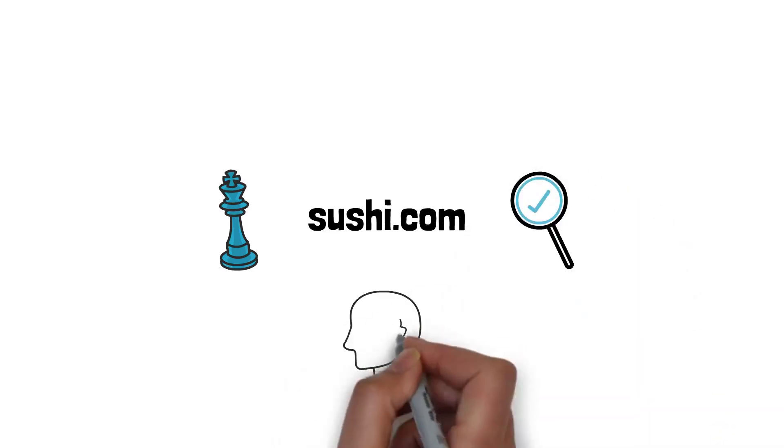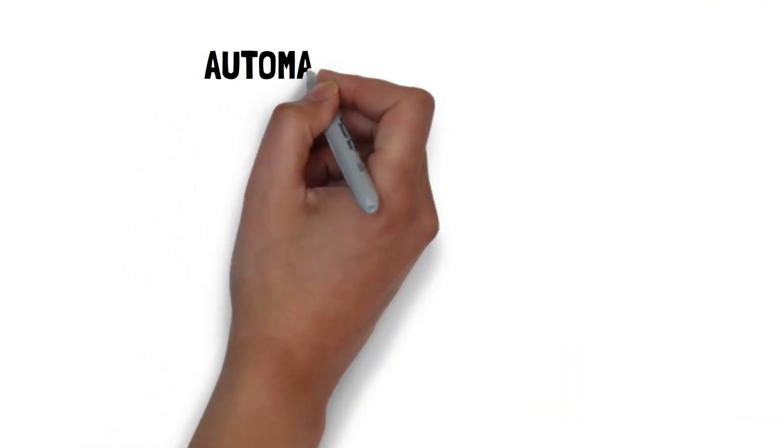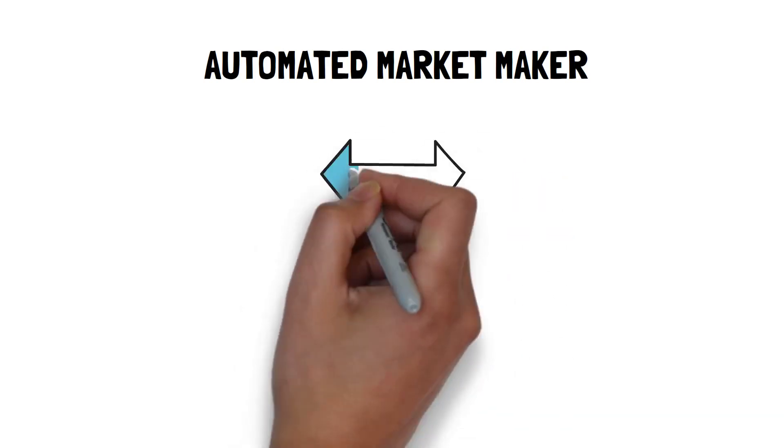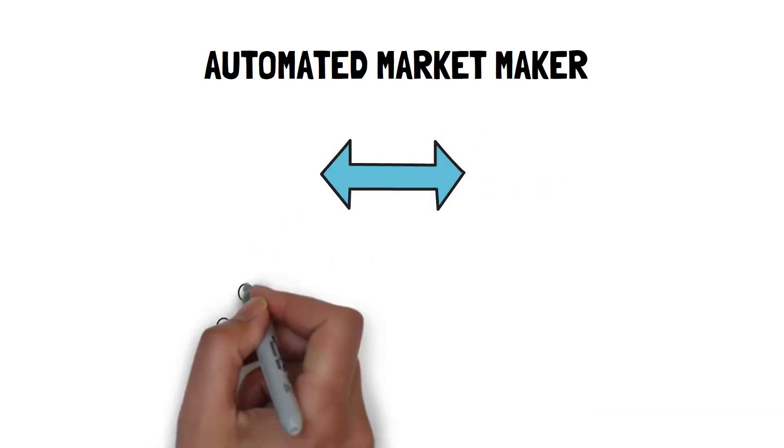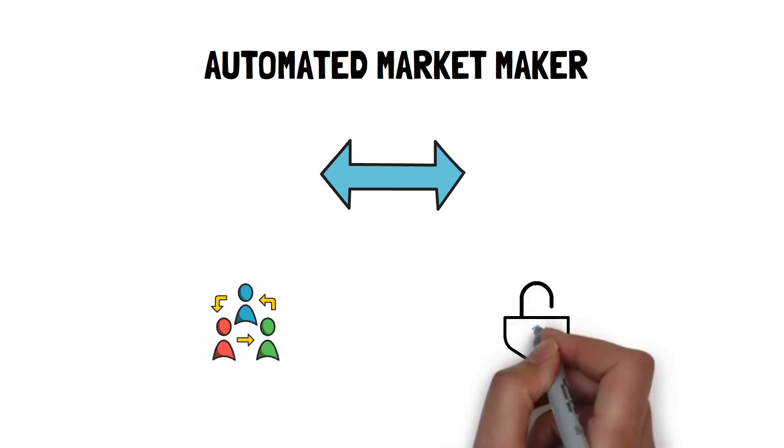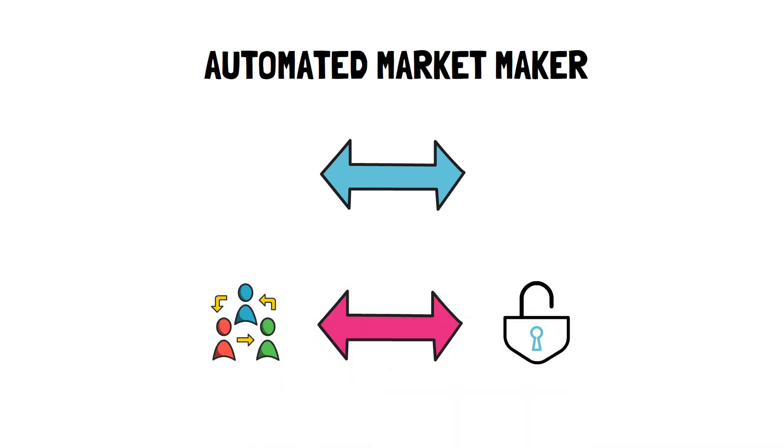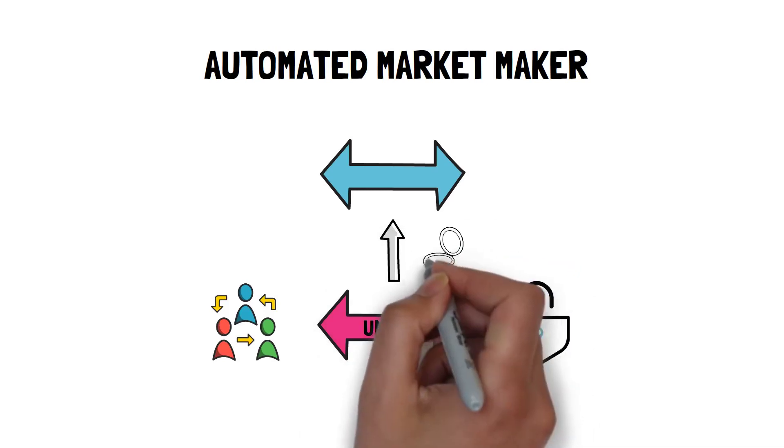Now let's dive a bit deeper into each of the Sushi features one by one. Automated Market Maker or AMM is the main function of Sushi that allows users to swap their assets in a decentralized and permissionless way. Sushi's AMM is a fork of Uniswap V2, so these two work in exactly the same way.